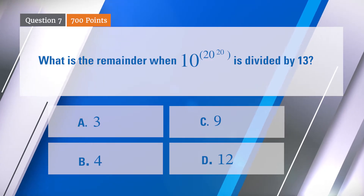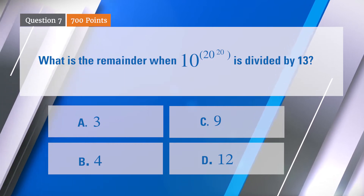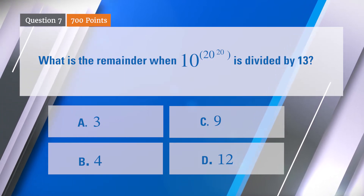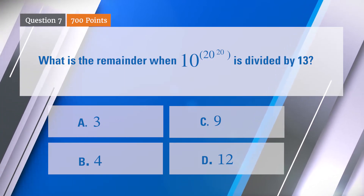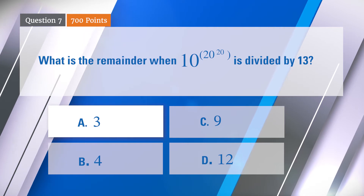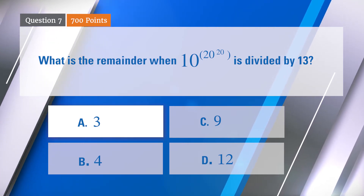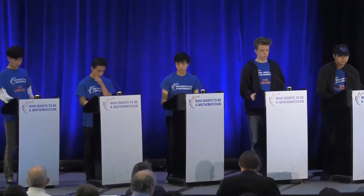Five chose A, one chose C, and one chose D. The correct answer is A — three. Five people got that right, nice going. Who got that one right? All right, so Eric.